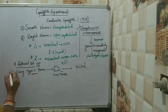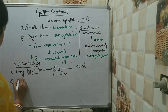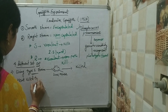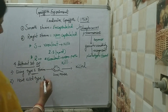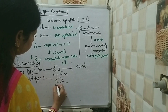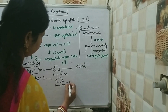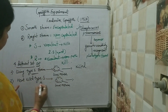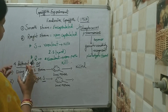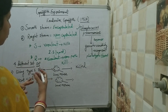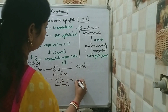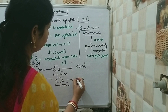In the second set, heat-killed type S strain was injected into another live mouse. Since it is the smooth strain it would normally be virulent, but because it is heat-killed, heat destroyed the virulency or virulent properties of S. So the mouse was not killed — it was alive.